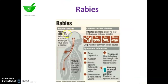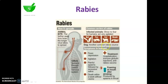The infected animals are the common carriers of Rabies. The infected animals show no fear for humans and act very agitated. For example: bat, cat, dog, and rabbit are another common source.